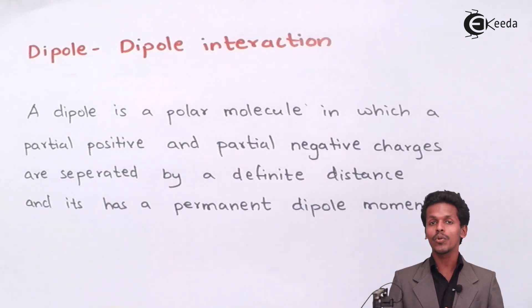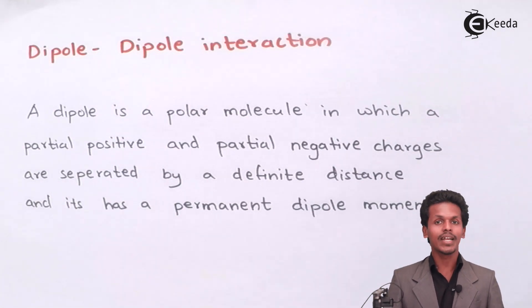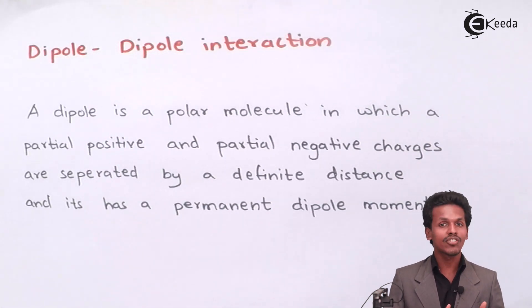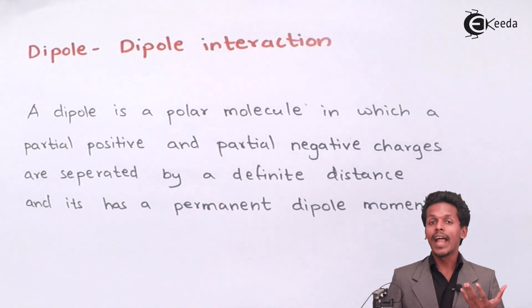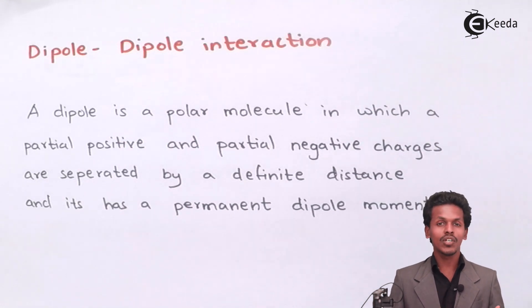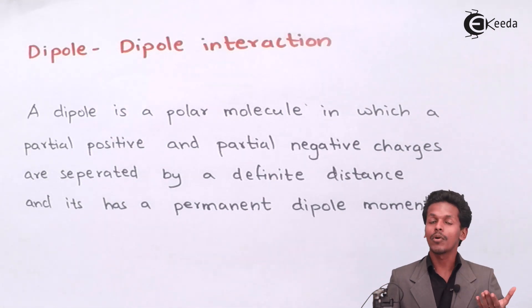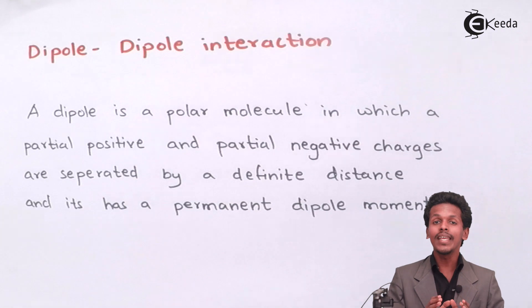Polar molecules are those molecules which have both positive and negative charge. For instance, take the molecule HCl. HCl has an H atom and a Cl atom, both bonded together by a chemical bond. Hydrogen is a partially positive charged atom, while chlorine is a partially negative charged atom. This positive and negative charge separation gives rise to what we call a polar molecule.